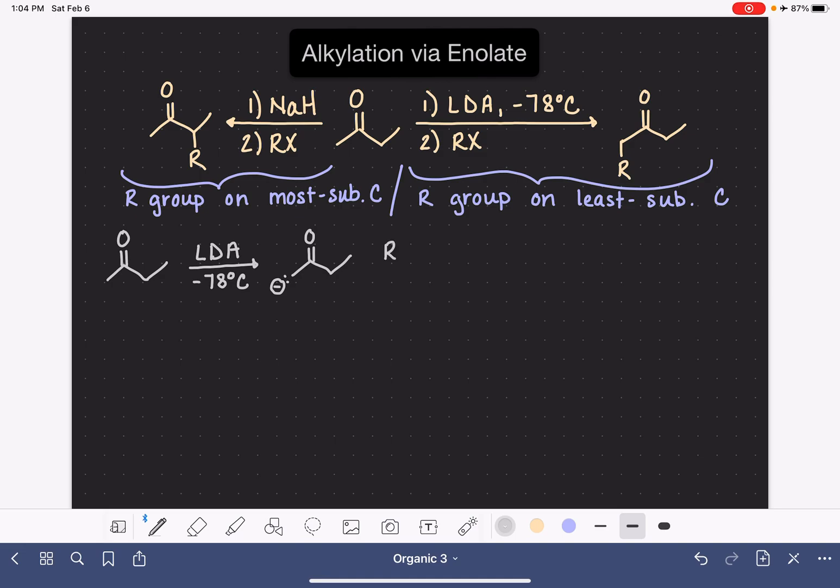Then we bring in whatever alkyl group that we would like in the form of an alkyl halide, and this is where the reaction is an SN2 reaction. That puts the alkyl group on that least substituted carbon.